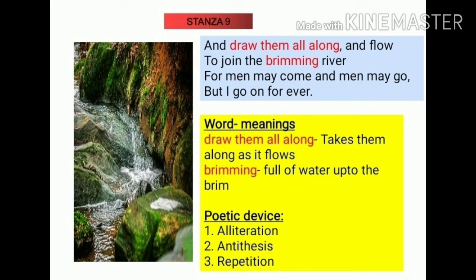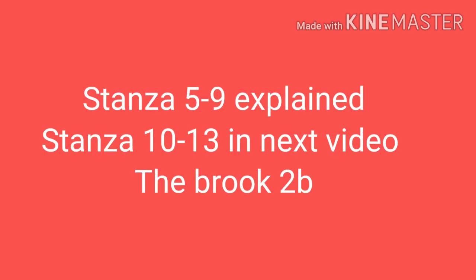The poetic device used here is alliteration — you can hear the 'm' sound in 'men may', and it repeats twice. The second one is antithesis — the words 'come and go' are antithesis. The third is repetition — the last three lines are repeated, and the words 'men may' are repeated twice. So with this I've explained stanzas 5 to 9 in this video, and in the next video we'll be understanding the remaining stanzas.